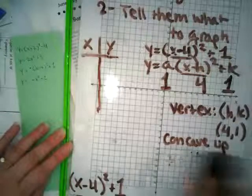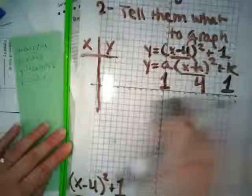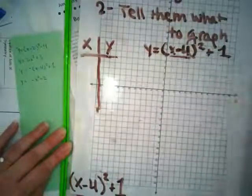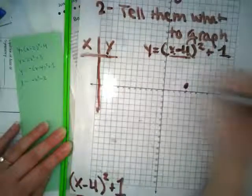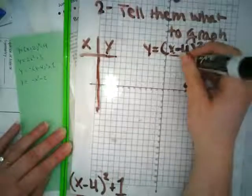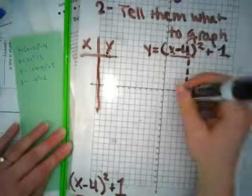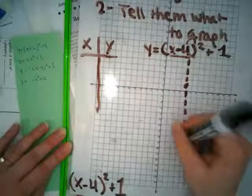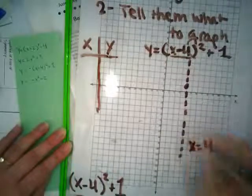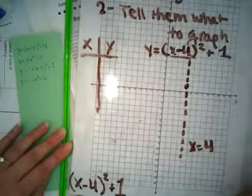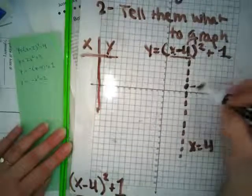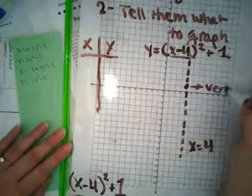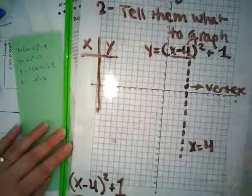So with this information, I'm going to now plot it. So I have my vertex is 4 comma 1. That's also my axis of symmetry. And I know it's concave up. So if this is where my vertex is, do I have any roots? I don't have any roots again.